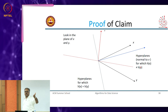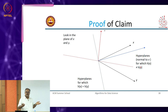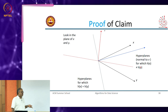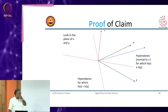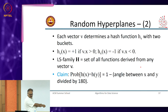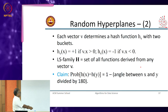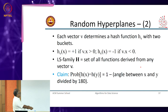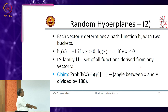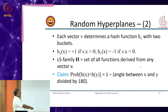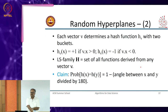The claim is: for each vector, there are only two buckets — h(x,v) is plus 1 if v·x is greater than 0, h(x,v) is minus 1 if v·x is less than 0. The probability that two vectors hash into the same bucket is 1 minus the angle between x and y divided by 180. When measuring the angle between x and y, we limit it to 180 — 0 means they lie in the same direction, 180 means opposite directions.